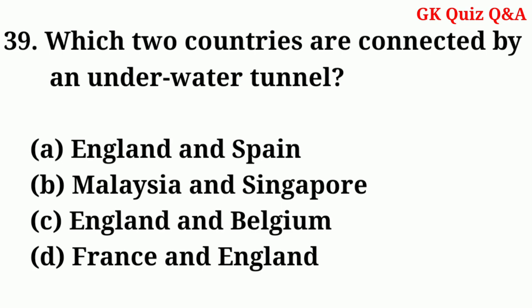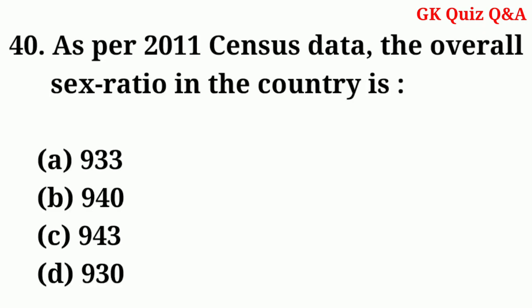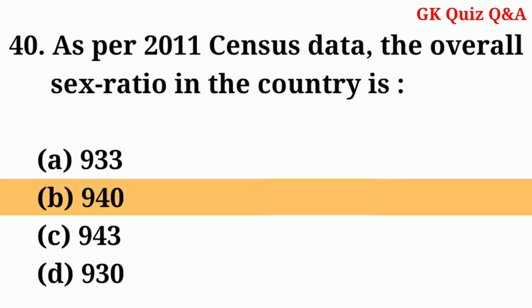Which two countries are connected by an underwater tunnel? Answer: France and England. As per the 2011 census data, the overall sex ratio in the country is? Answer: 940.